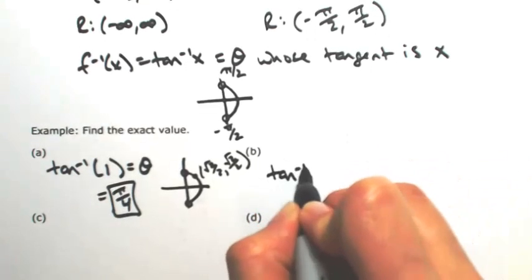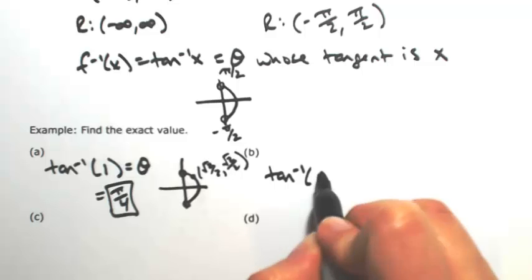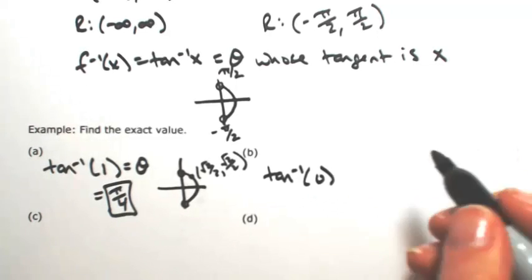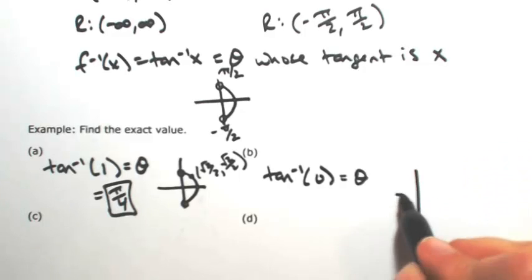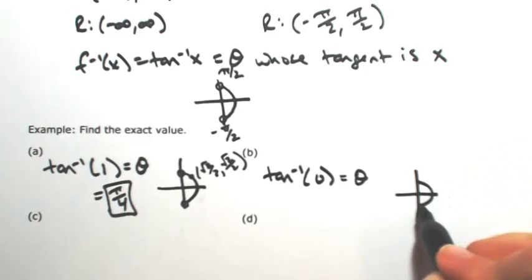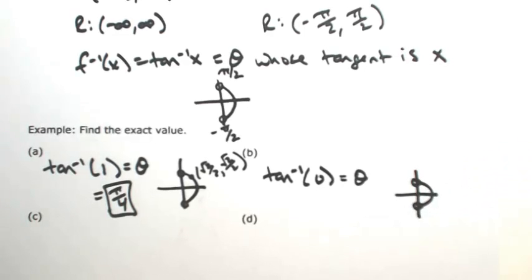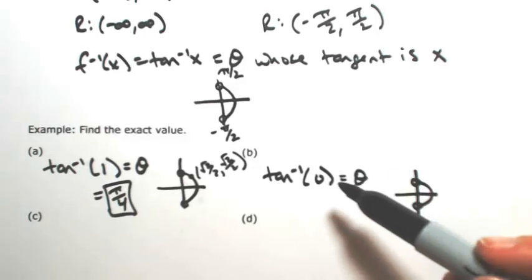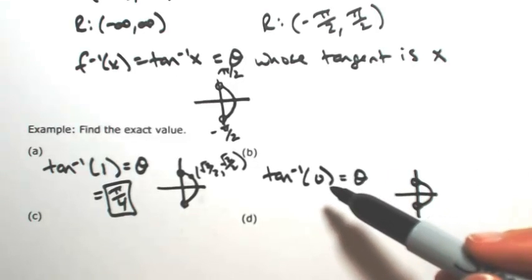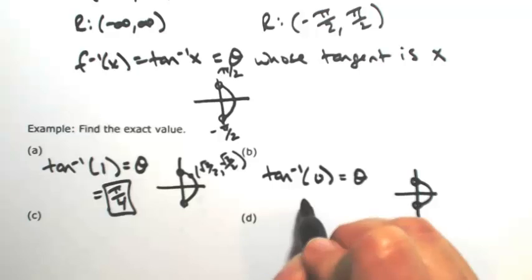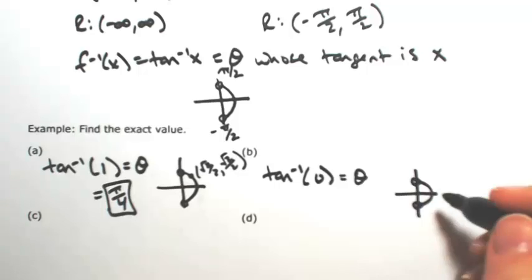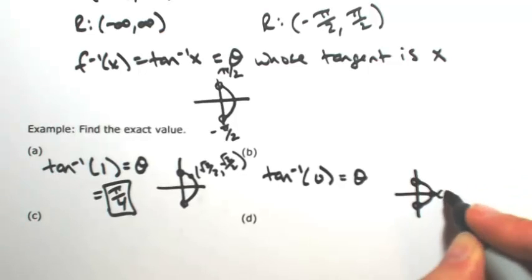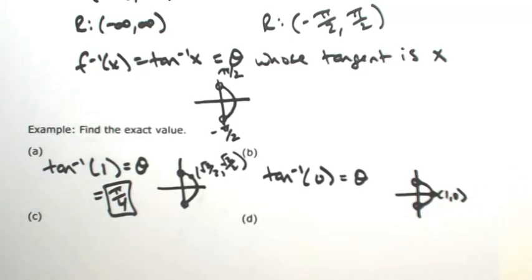Now find the inverse tangent of 0. I'm looking for an angle on the right side of the unit circle whose tangent is 0. Since tangent is y over x, I want y to be 0. That's going to be at the point (1, 0), giving an angle of 0.